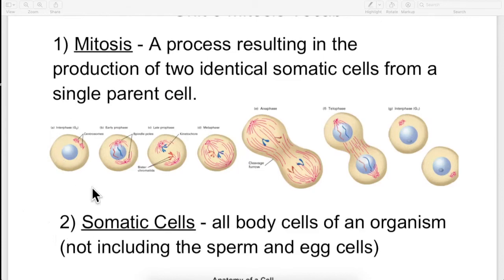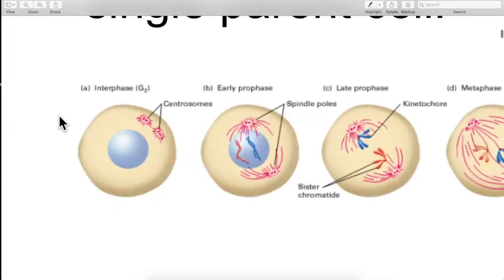So mitosis is how we are going to make brand new somatic cells. Starts off here, a cell. So inside the cell, we have a nucleus. And then inside of that nucleus is DNA. Remember, you have two copies of every bit of DNA, one from mom, one from dad. They're not exactly identical, but they're close enough. And then you made your own DNA.